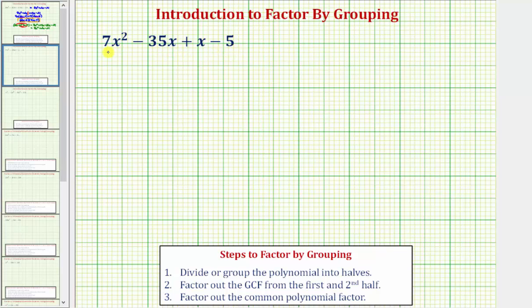Notice how we have an even number of terms which is required to factor by grouping. And also notice how these two middle terms are like terms.